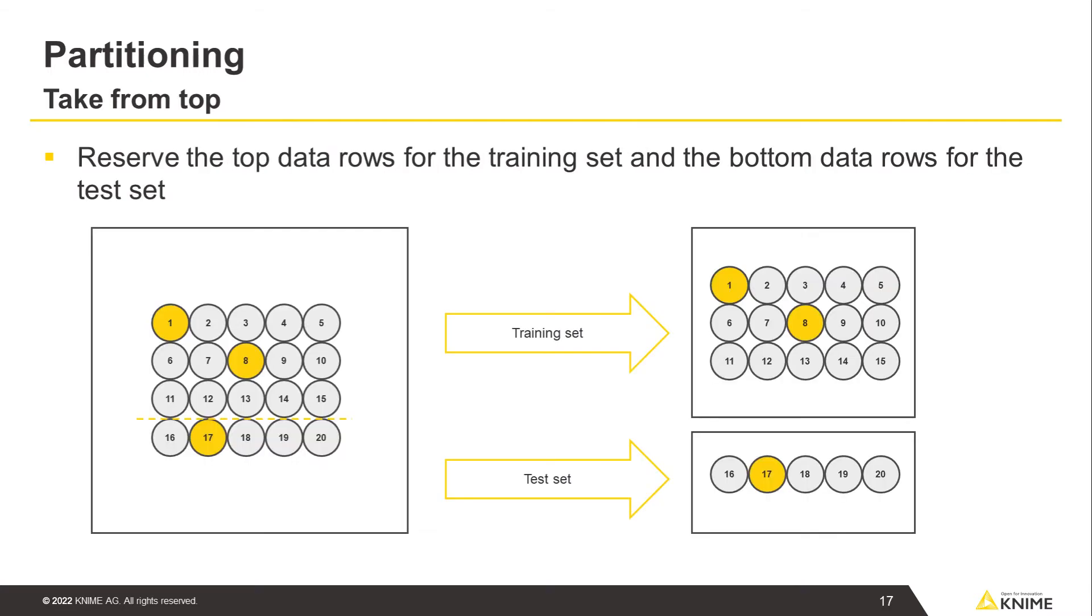The take from the top strategy reserves the top data rows for the training set and the bottom data rows for the test set. If the data rows are stored by time in an ascending order, then the training set will contain the past samples and the test set the future samples. That's why this sampling is used for time series analysis, because it preserves the time order.